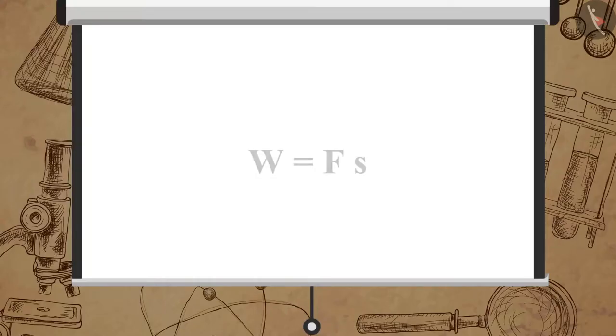Suppose an object with mass M is moving along with uniform velocity U. Let a force F act on the object and it gets displaced through a distance S along the direction of force. Now the work done W is equal to F times S.